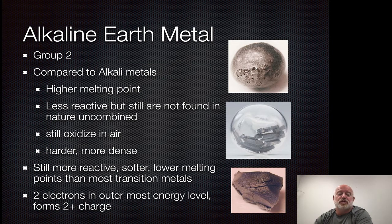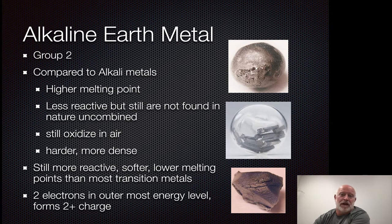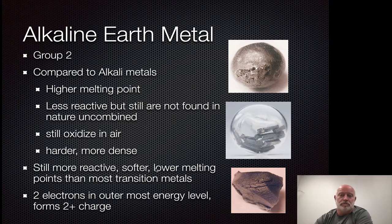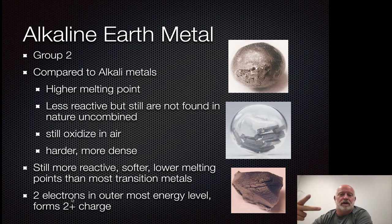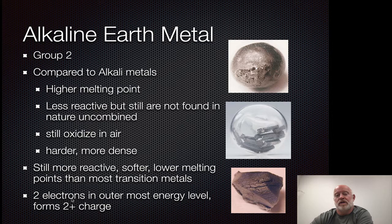The next group over we call the alkaline earth metals — that's group two. Because we move one step to the right, we have similar properties to the alkaline metals, but just subdued a little bit. It's subdued because they're a little bit smaller — they're not quite as big as the alkaline metals. In this case, they have two electrons they are going to give up to form ions, which means moving two electrons at a time takes more energy than moving one electron. So things don't happen quite as aggressively as you would see with an alkaline metal.